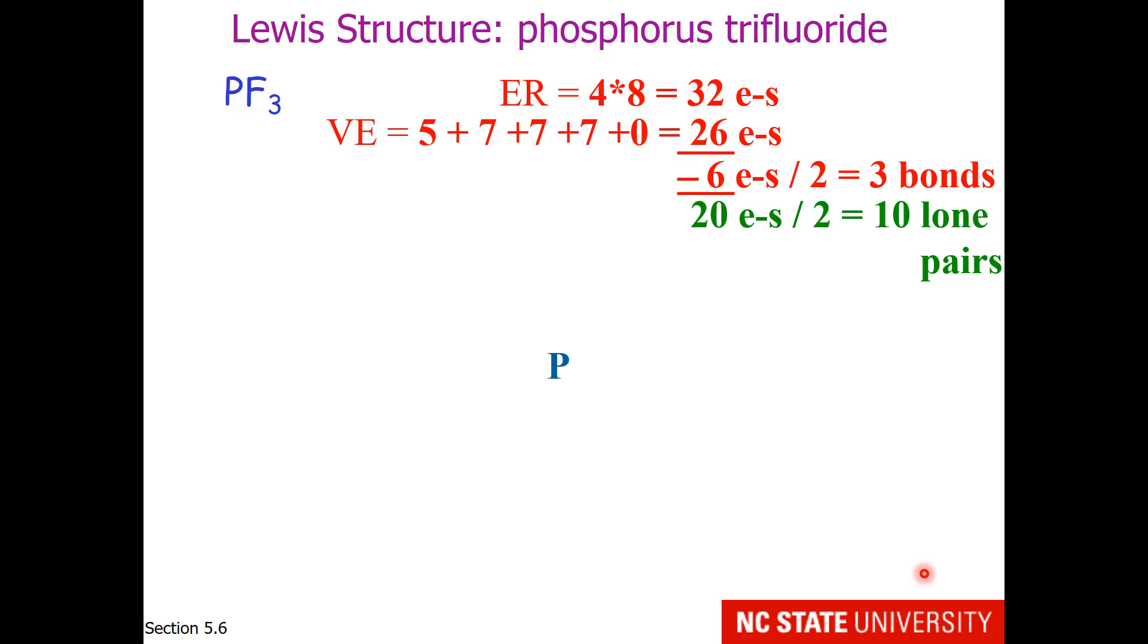Phosphorus goes in the middle. Fluorine goes around the outside. We have three bonds, so one, two, three.